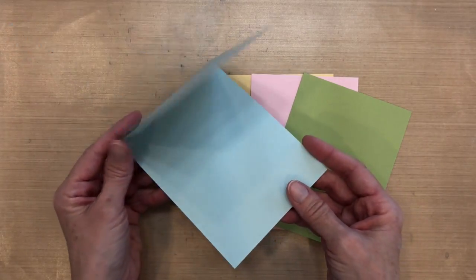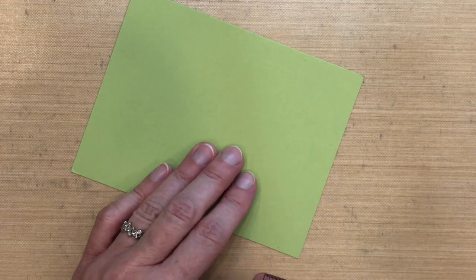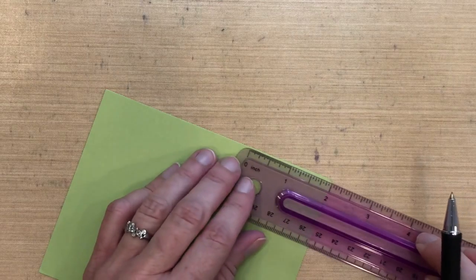Now my Soft Sky here is going to be my card base, so I have that cut to an A2 folded size. I'm going to start with an A2 size on all these colors and I'm going to show you the measurements that I found to work on each one of these colors.